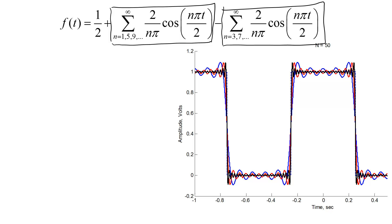Let's overlay the three cases to get a feeling for how the solution compares to the actual function as we increase the number of terms. For the most part, especially far away from the edges of the original square wave, the Fourier series gets really close to the original function. However, this maximum difference between the two close to the edge doesn't look like it's getting smaller.